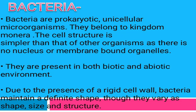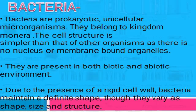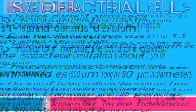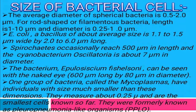A bacterial cell varies a lot in its size, shape, and structure. Because of this variation, they have a rigid cell wall that helps maintain their definite shape. The size of bacterial cells is measured in micrometers.